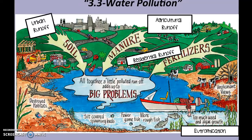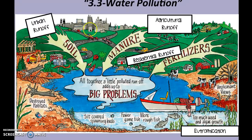Hi super scientists, we're going to be learning about water pollution — this is your 3.3 note section, Miss Owens. That little graphic looks familiar. We can see urban runoff coming from all these cities and cars; it's probably going to include oil and other contaminants from a city. Urban refers to city. Agricultural runoff — 'agri' means farm-related — we've got some cows and some farms.